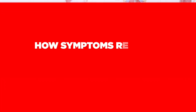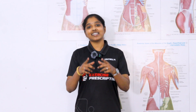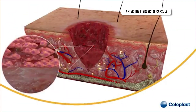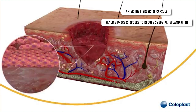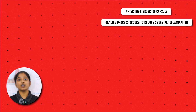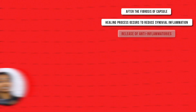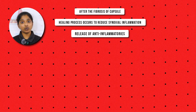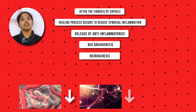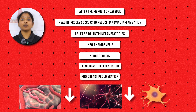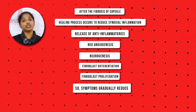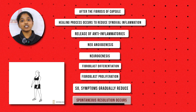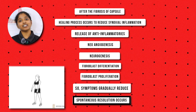In the thawing stage, how do the symptoms resolve spontaneously? Once fibrosis of the shoulder capsule occurs, our body keeps trying to heal it. The main cause for fibrosis is synovial inflammation, so our body will release anti-inflammatories. These anti-inflammatories will reduce the vascular changes, neural changes, fibroblast differentiation, and fibroblast proliferation — gradually reducing the symptoms of adhesive capsulitis. This is how adhesive capsulitis resolves spontaneously in the thawing stage.